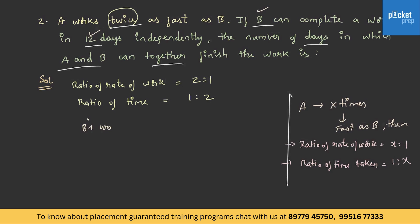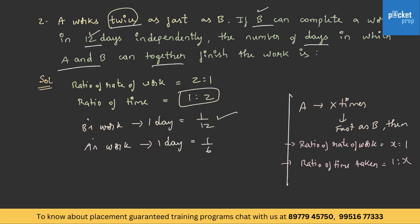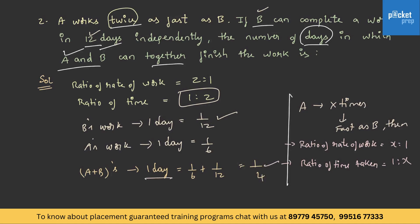B's work in 1 day will be 1 by 12. From this, if B's work is 1 by 12, then A's work in 1 day will be 1 by 6. He is asking for the number of days in which A and B together finish the work. A plus B's 1 day work is 1 by 6 plus 1 by 12, and on solving this we get 1 by 4. By reciprocating, A and B together can finish the work in 4 days.